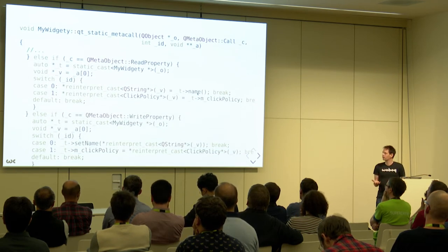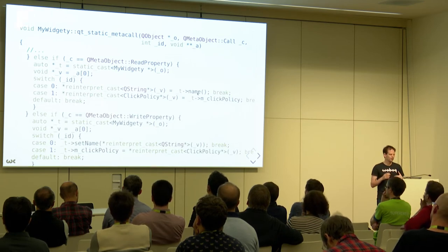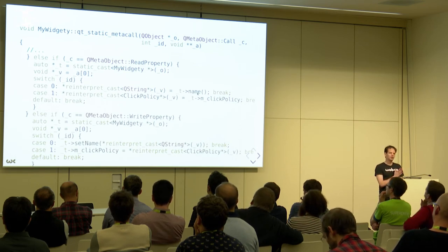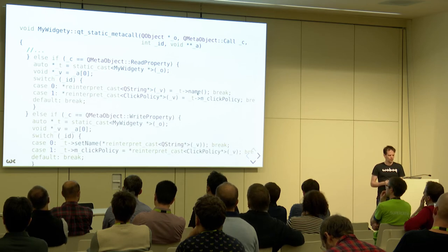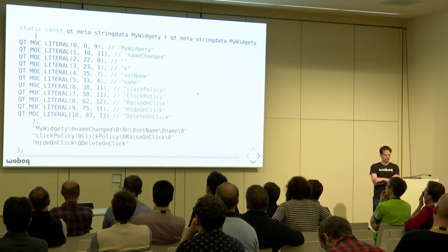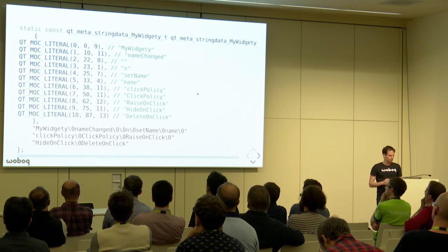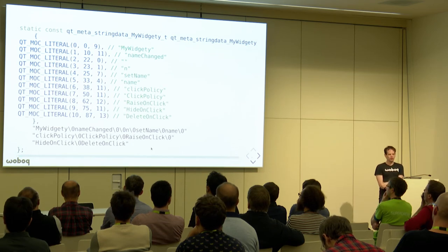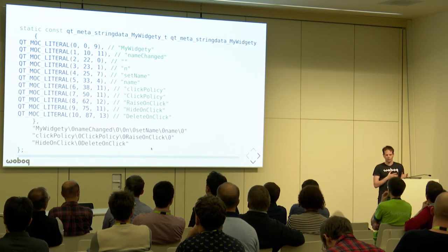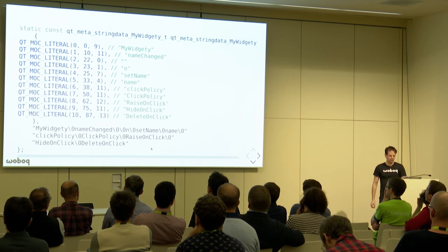The same system is used to read or write a property. We use again this array of pointers to store the location of the return value or the property we want to set. This way, given an index and a pointer to the value, we can set or get this property. Finally, we have all the strings required for this object. All the strings are put in one big string separated with zeros — it's one string, which means there is only one relocation. The MOC-generated code is optimized to have the least possible relocations.